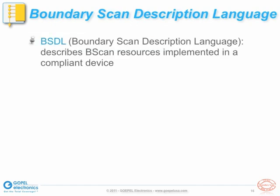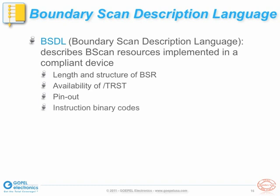In addition to the test features implemented in compliant devices, the IEEE 1149.1 standard also specifies a description language for those features. The so-called Boundary Scan Description Language, or BSDL, defines the port function and pinout of a device, the availability of an ID register and its capture value, the length of the instruction register, its capture value, available instructions and their binary opcode, the types of boundary scan cells, their order in the boundary scan register, the boundary scan cell to pin mapping, the maximum TCK frequency, and more.